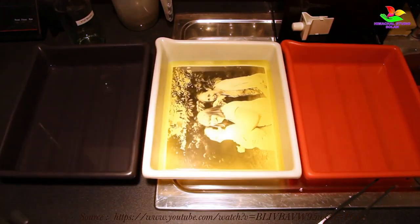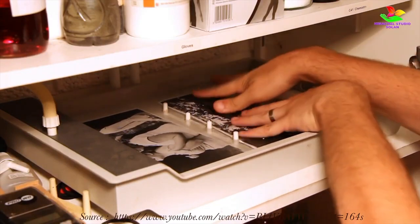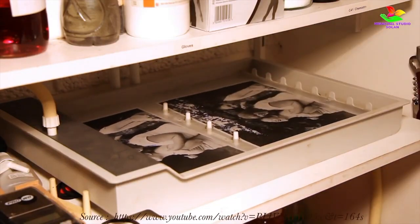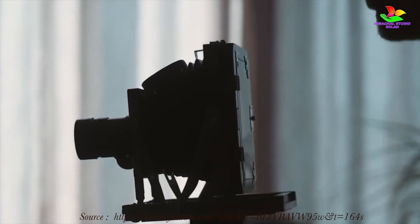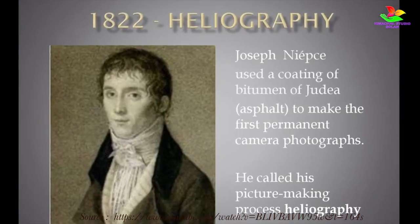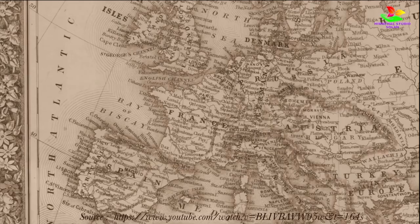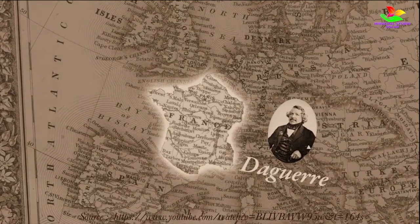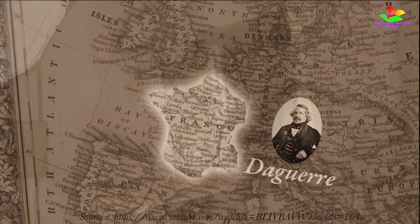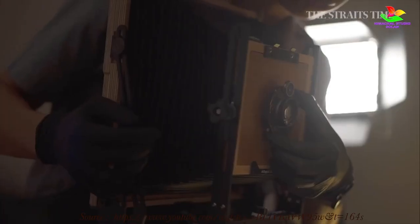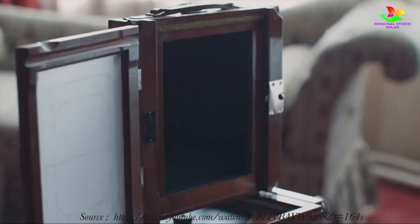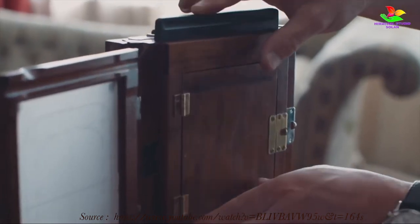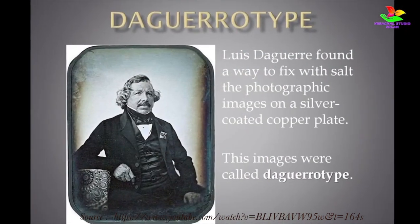Following Niépce, the experiments were continued by Louis-Jacques-Mandé Daguerre in France, further advancing the field of photography. Daguerre simplified and adapted the procedure, making it more practical and suitable for commercial purposes. His developed photography method became widely known as the Daguerreotype, and photographs produced using this technique were referred to as Daguerreotype photographs. In this process, he used silver-coated copper plates to capture images. The method remained in use until around 1860, contributing significantly to the early days of commercial photography.